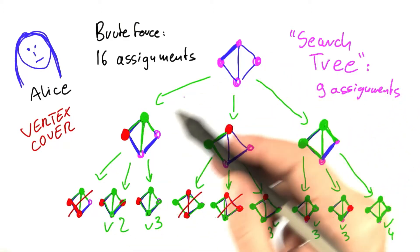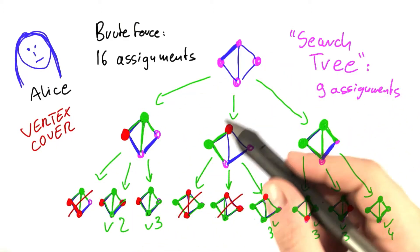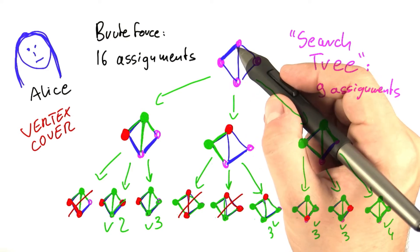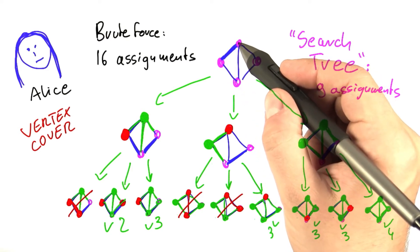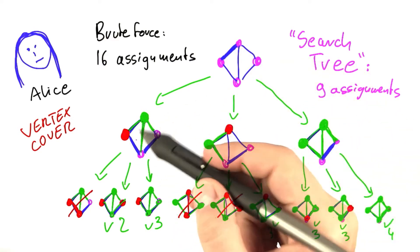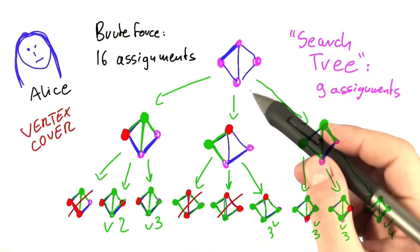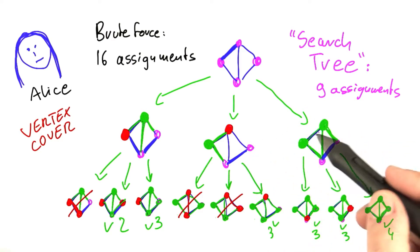I would like you to think about a few properties of constructing the search tree this way. Taking an edge that is not yet covered, where both endpoints are not part of the vertex cover, and then branching into three different possibilities: putting one endpoint into the vertex cover, putting the other endpoint into the vertex cover, or both.